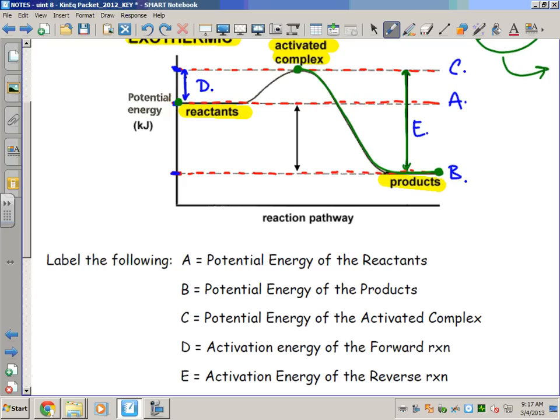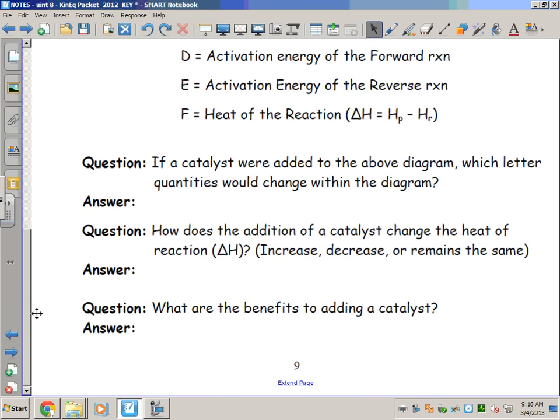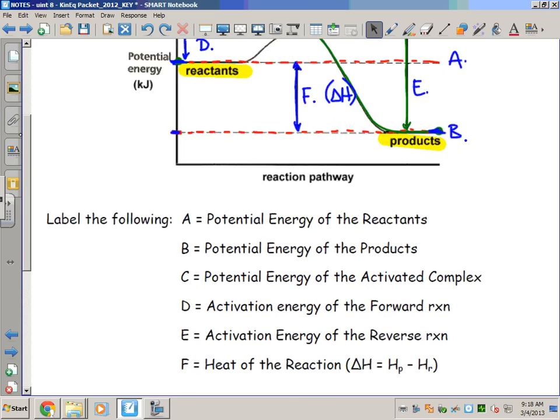And then F, the final label we have to place on this. Again, is the most commonly asked question when it comes to a potential energy diagram, and that's the overall energy of reaction. That's the difference between the reactants and the products, the delta H. The arrow connecting those two dotted lines is F, or our delta H, the energy of reaction or overall enthalpy of reaction. And it's always products minus reactants.